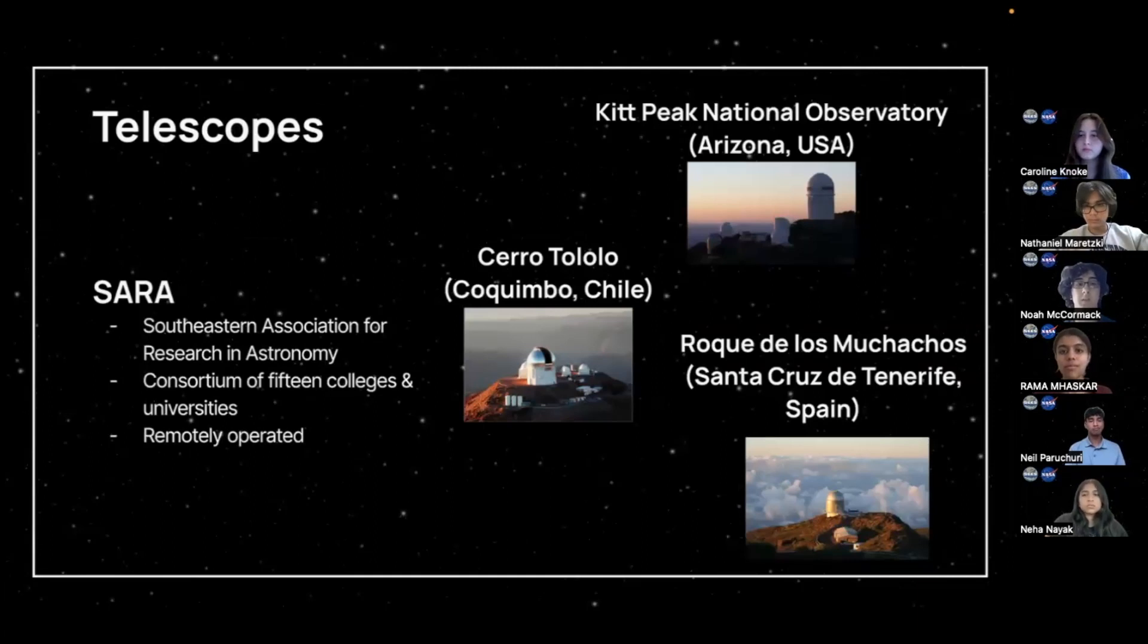So, the telescopes used were from the Southern Association for Research and Astronomy. The association consists of 15 colleges and universities. Then, telescopes are remotely operated. There are several locations from Kitt Peak National Observatory, Cairo Tololo, Roque de los Muchachos, and La Palma.